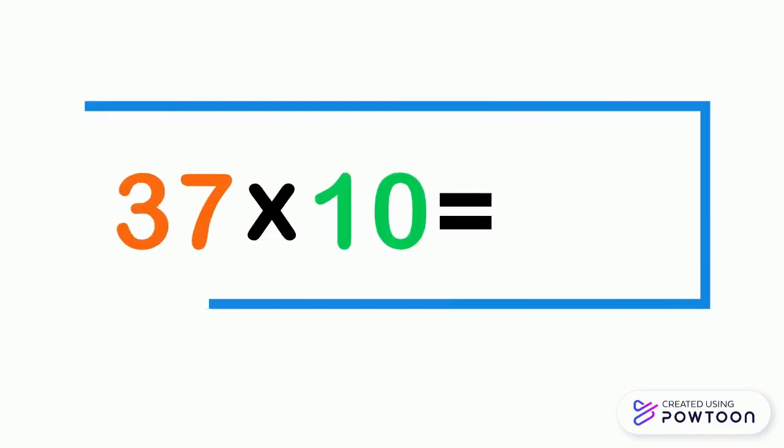Now multiply 37 by 10. So just write 37, then put 0 to the right side of this number. 37 times 10 equals 370.